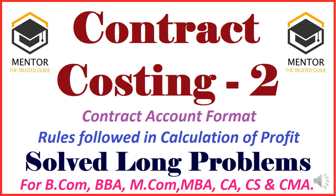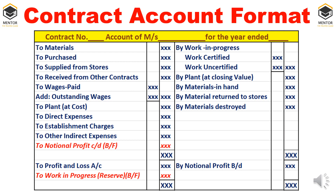In the first video these concepts were covered but only with short questions. Now I will take up long questions. The format of the contract account: debit side has all expenses; credit side has work in progress, closing value of plant, material in hand, material returned to store, material destroyed or lost. Notional profit is then transferred to profit and loss account, and the resultant figure goes to work in progress reserve.